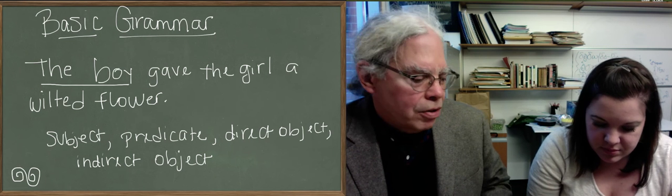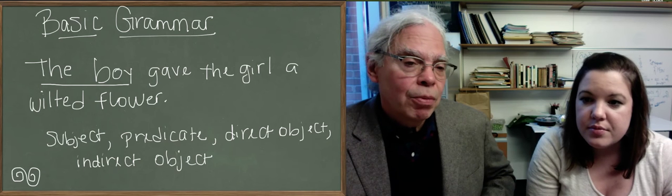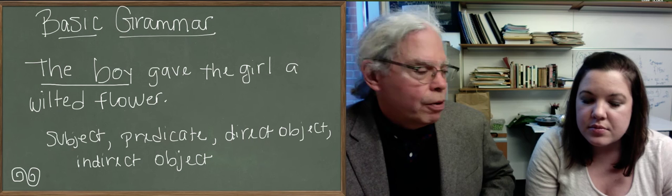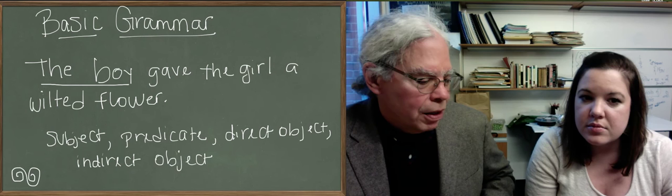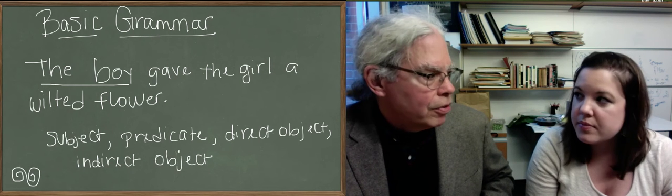For example, you could recast this sentence in another way and say, a wilted flower was given by the boy to the girl. And then a wilted flower would be the subject of the sentence. Even though it's not doing anything, it's being given. But it's not doing any active process.